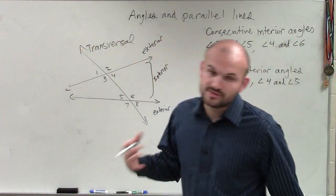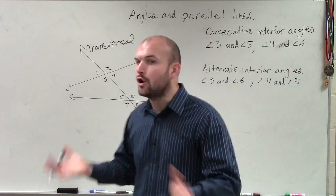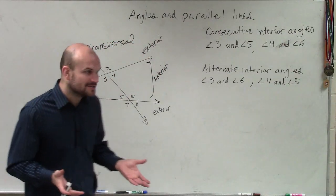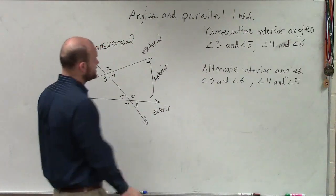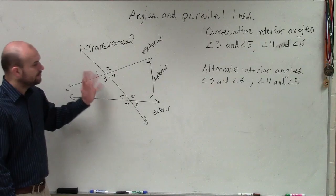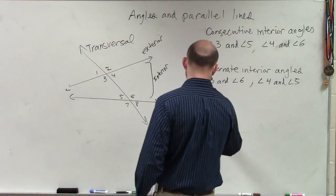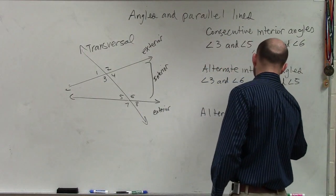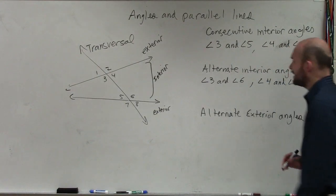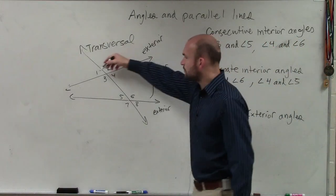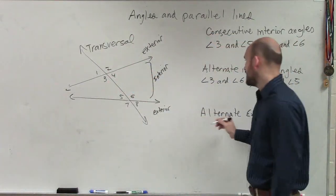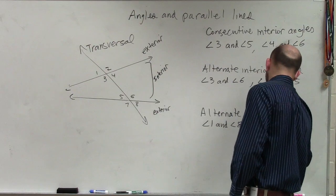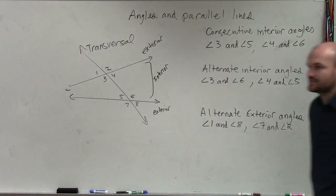I'm going over this again just to make sure you guys can reiterate, because we're going to be using these angles all year. It's really important that you guys have as many notes as possible. We talked about consecutive interior angles, and then we got to also exterior — alternate exterior angles. On alternate exterior angles, we're talking about only exterior angles: angle one and angle eight, and angle seven and angle two. Those are our alternate exterior angles.